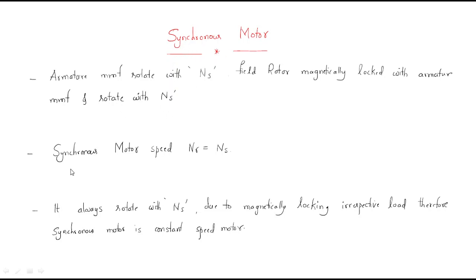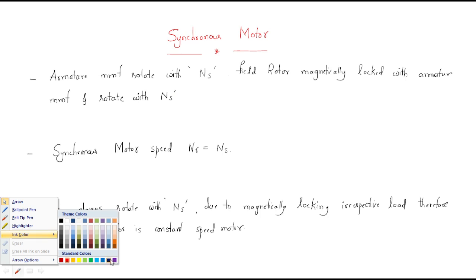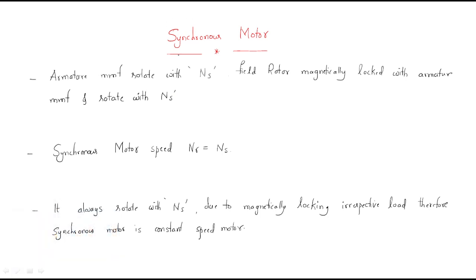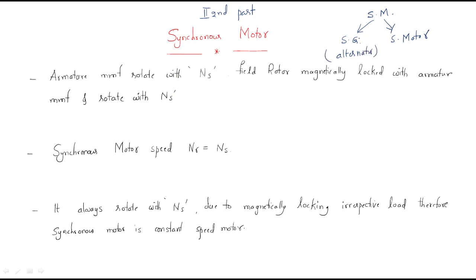In this session we will discuss the next topic: synchronous motor. Up to now we discussed about the synchronous generator, that is the alternator. Now the second part is the synchronous motor. The synchronous machine is two types: one is synchronous generator and another one is the synchronous motor. Synchronous generator's another name is alternator. Now we will enter into the synchronous motor.